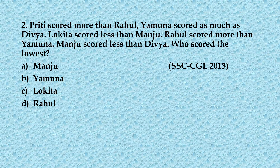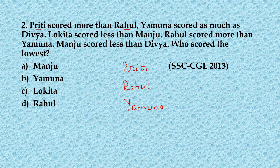Let us now have a look at the second question. This is about marks. Preeti scored more than Rahul. Yamna scored as much as Divya, so Yamna and Divya's marks are equal. Lokita scored less than Manju. Rahul scored more than Yamna, so Rahul and Divya will be at the same level. Manju scored less than Divya.